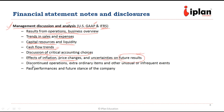MDA also includes information regarding discontinued operations — a part of the operations or a business segment — or if there is an extraordinary item in accounting, or any unusual or infrequent event such as the sale of part of an asset. Finally, the MDA captures past performance and the future outlook of the company.